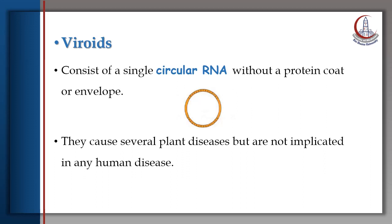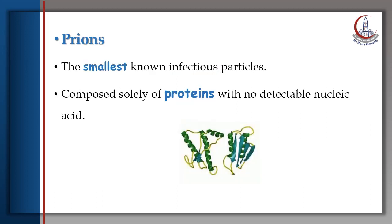Viroids, or plant viruses, consist of a single circular RNA without a protein coat or envelope. They are not implicated in any human disease. Prions are the smallest known infectious particles composed only of proteins. These proteins are involved in human and animal diseases and will be discussed in details in the CNS module.